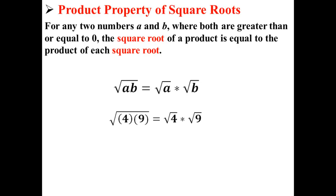Here, let's try that with an example. Our a is 4 and our b is 9. So the square root of 4 times 9, or basically the square root of 36, is equal to the square root of 4 times the square root of 9.